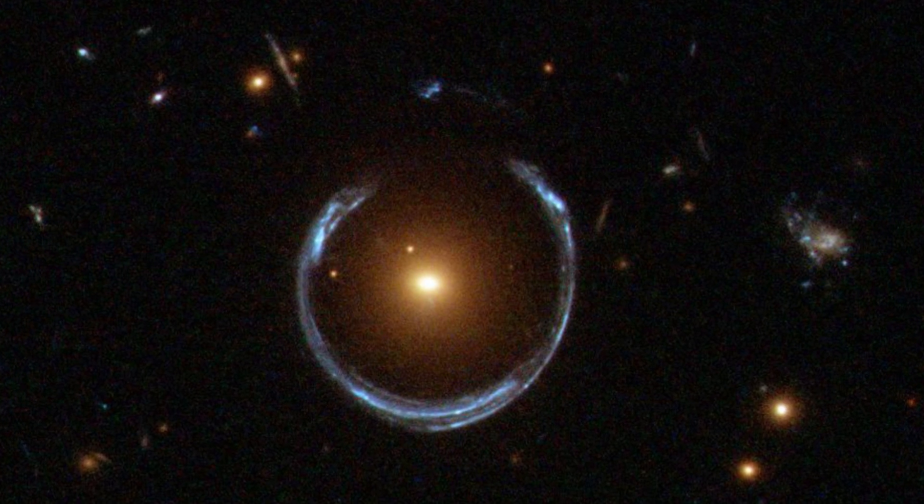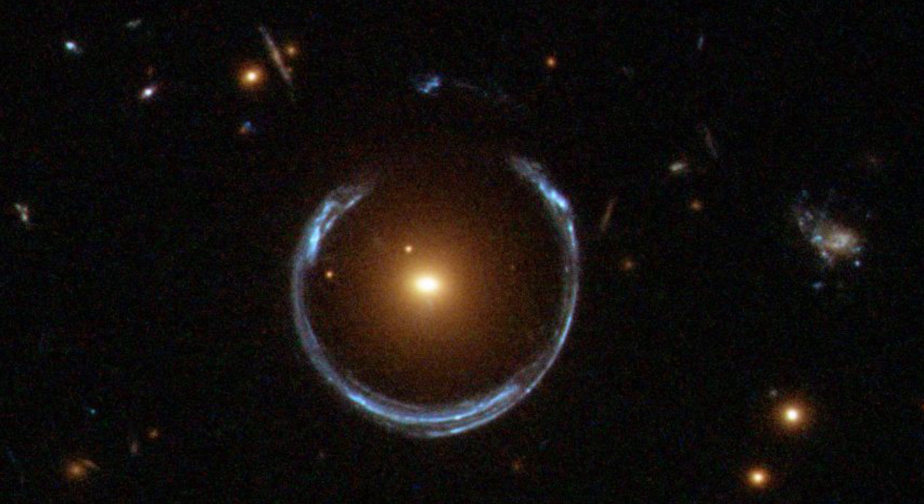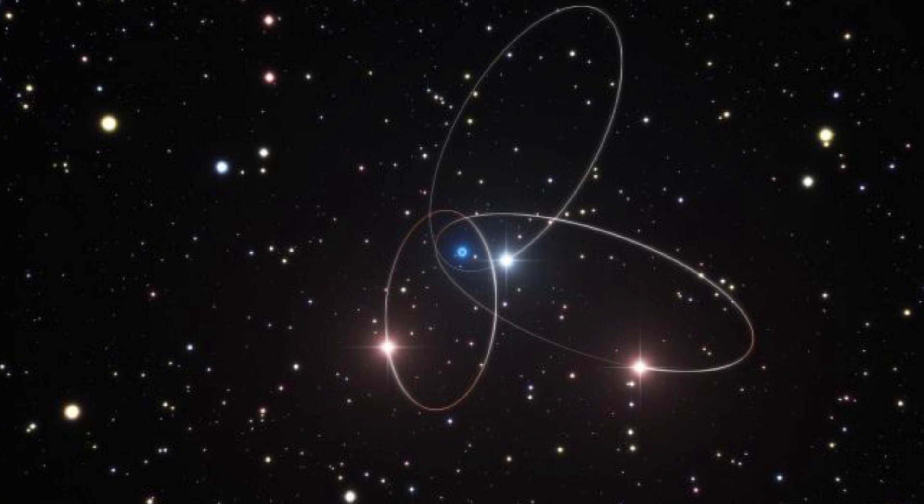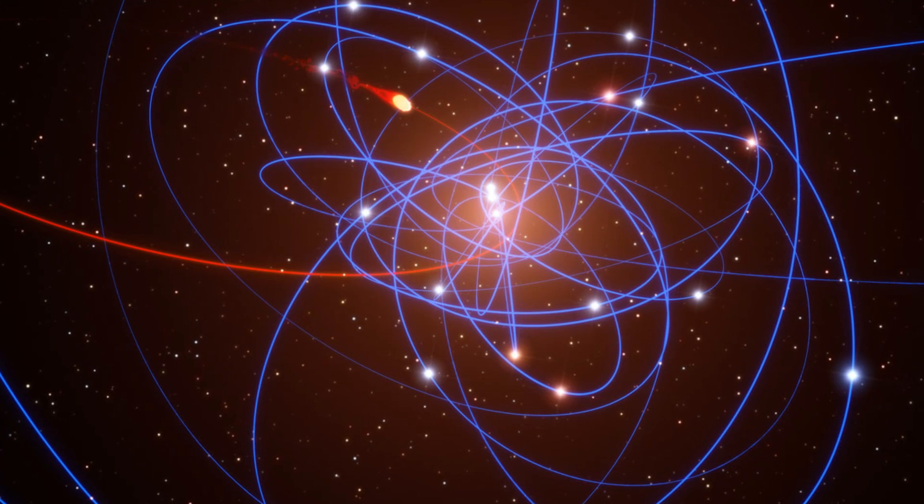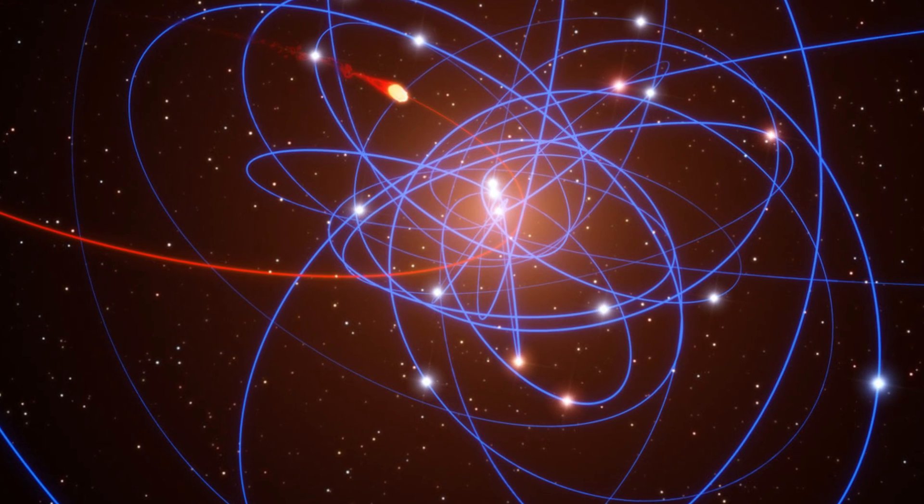So if there's an invisible substance that's affecting how we see distant galaxies, and its gravity is also affecting the speed at which stars orbit around galaxies, what is it?